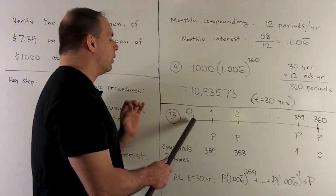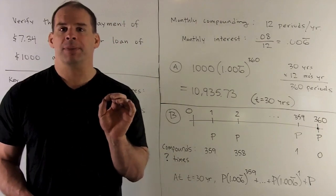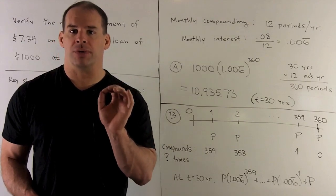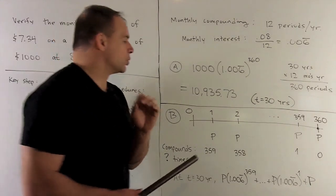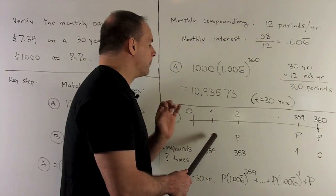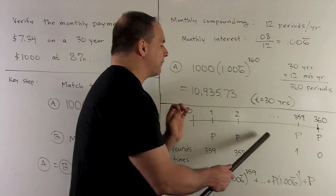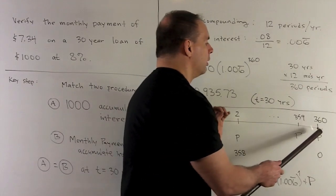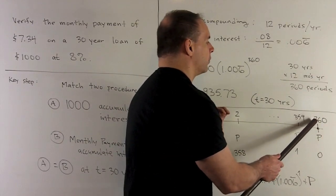Now, at T equals zero, we haven't made any payments yet. So there's nothing going on at T equals zero so far. T equals one, okay, our first month, we're going to have one payment made. And then I'm going to make a payment every month after until I get to time T equals 360.